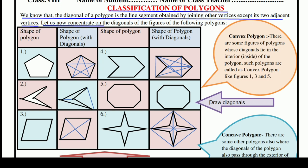Let us now concentrate on the diagonals of the figures of the following polygons. अब हम नीचे दी गई जो polygon की figures हैं, उनको ध्यान से देखते हैं और उन पर concentrate करते हैं कि आखिर उनमें क्या चीज़ है।